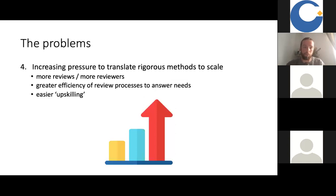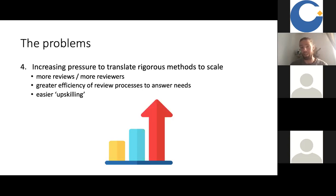There's increasing pressure on us as a community of practice to translate rigorous methods into scale — people want more reviews, more people doing reviews, more reviewers. There are also increasing demands for improving the efficiency of review processes to get a systematic review conducted to a rigorous standard in a shorter period of time. Often those pressures cause people to cut corners in order to meet an evidence need. And there's also pressure to make it easier for people to conduct reviews — people are increasingly asking to be able to learn the techniques needed for systematic reviews in a more digestible and accessible way.